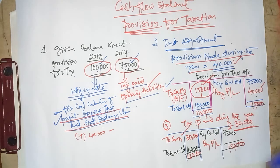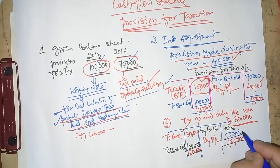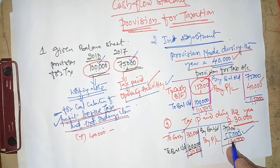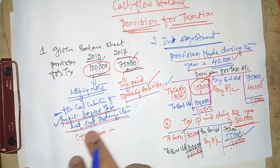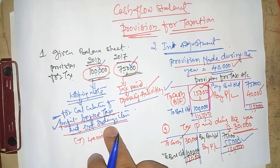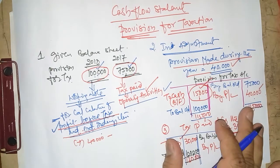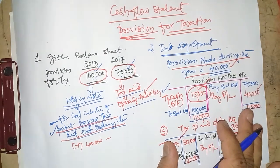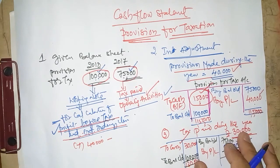The balancing figure is 25,000 plus 30,000 equals 55,000 by P&L. This amount will be taken as provision made during the year under calculation of profit before tax and extraordinary items. These are the three situations we can find in a cash flow statement regarding provision for taxation.